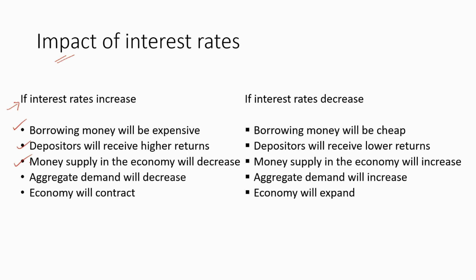Which means the money circulation in the economy will be decreased. As a result, aggregate demand will decrease. Aggregate demand is the total demand for goods and services in an economy. Because the money circulation in the economy decreases, the aggregate demand will also decrease. As a result, the economy will contract.